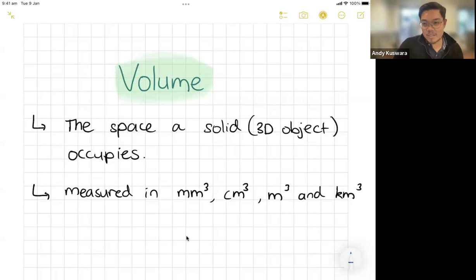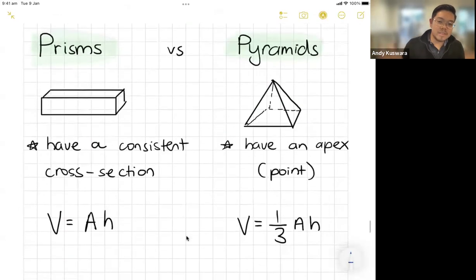It's anything measured in millimeters cubed, centimeters cubed, meters cubed, kilometers cubed—anything that is a measurement cubed. Now the main two formulas that you will get are prisms and pyramids, and you also get a sphere.